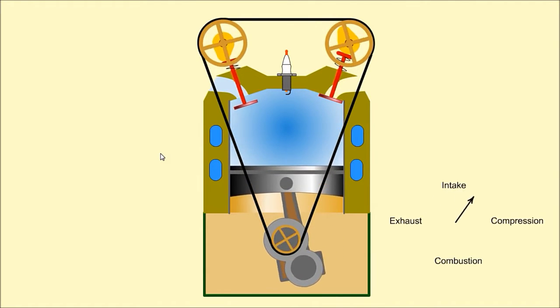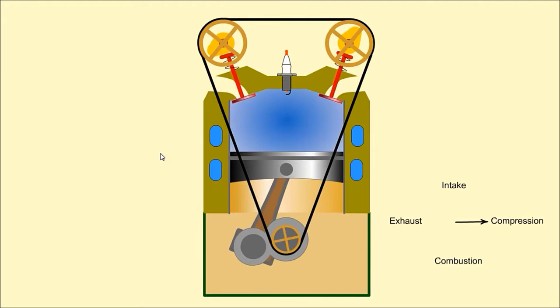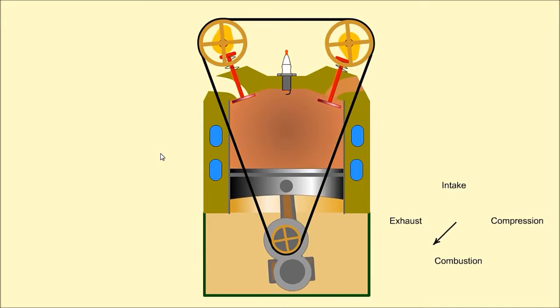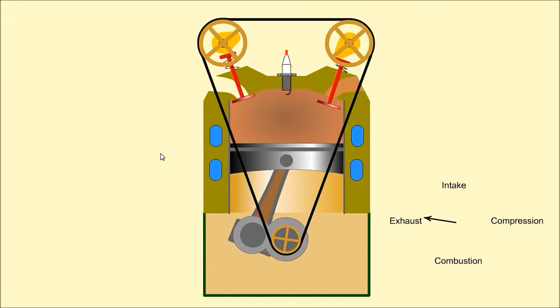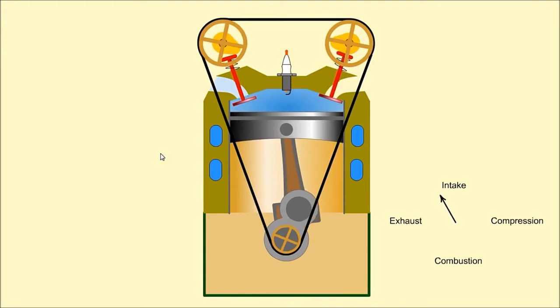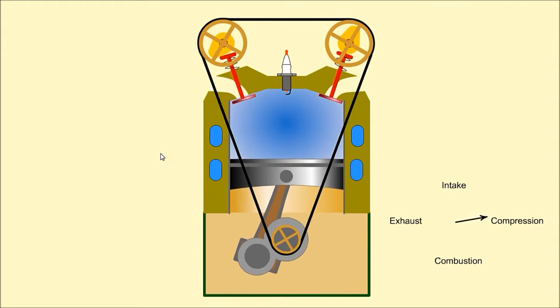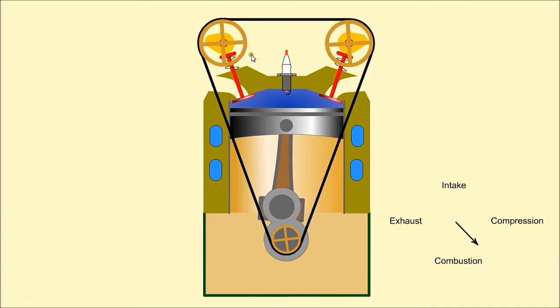Compression: the piston compresses the mixture. Combustion: compressed gas is ignited by a spark plug and exhaust burnt gases are expelled from the cylinder. Note the camshafts which operate the valves only rotate at half the speed of the crankshaft.